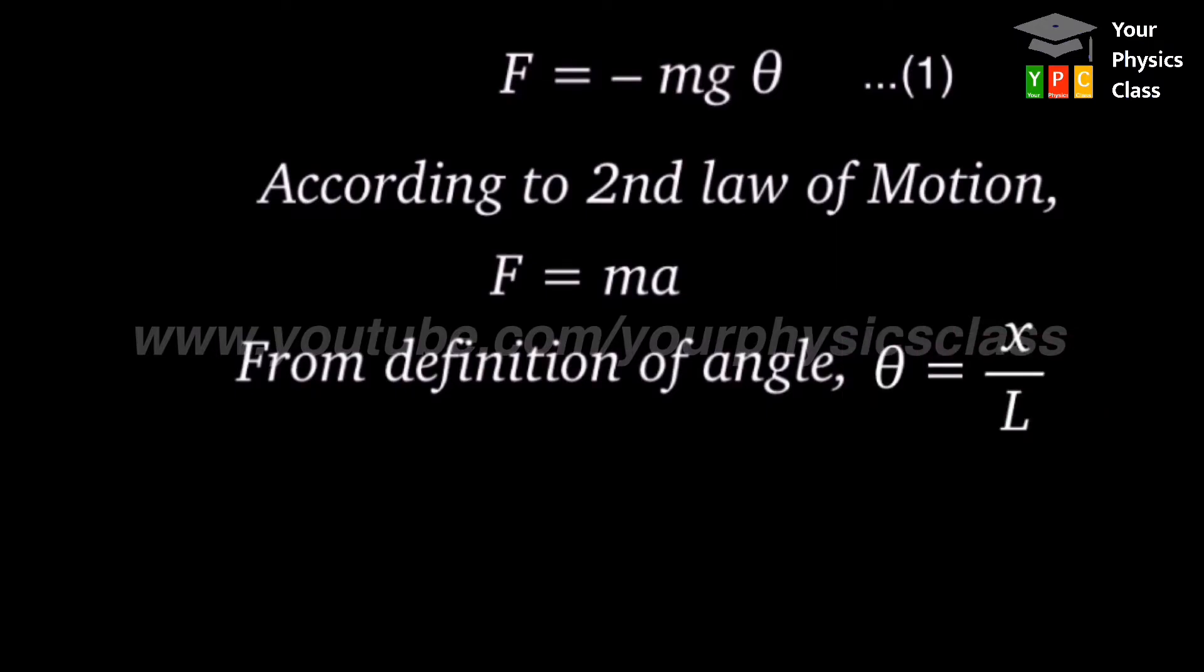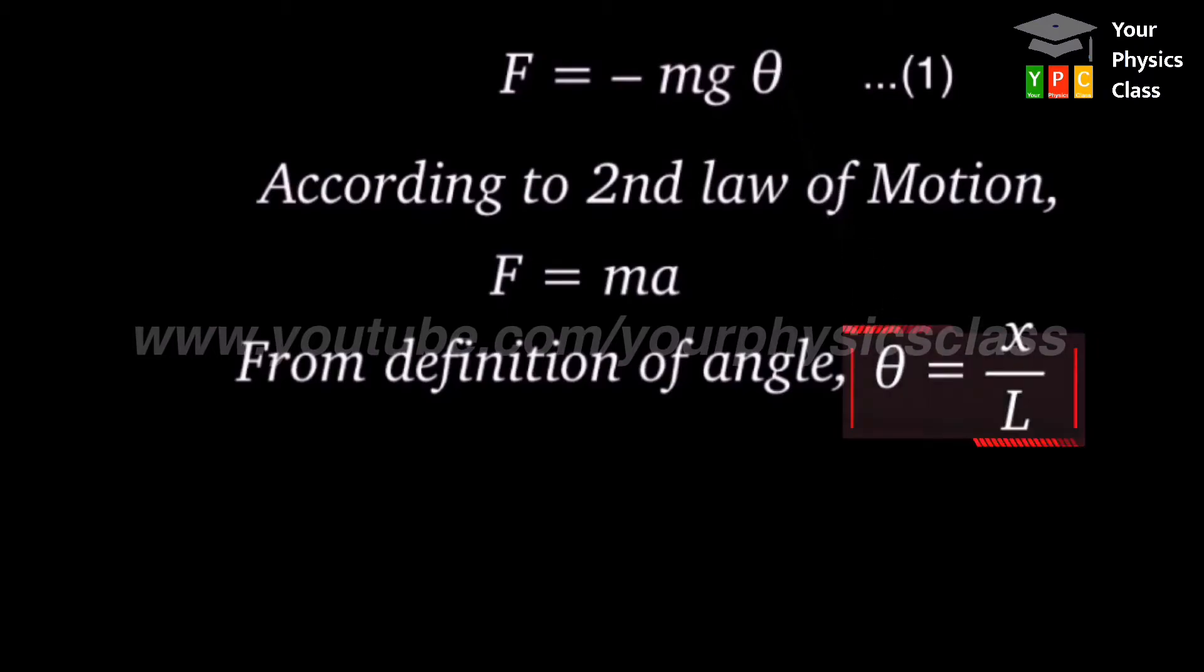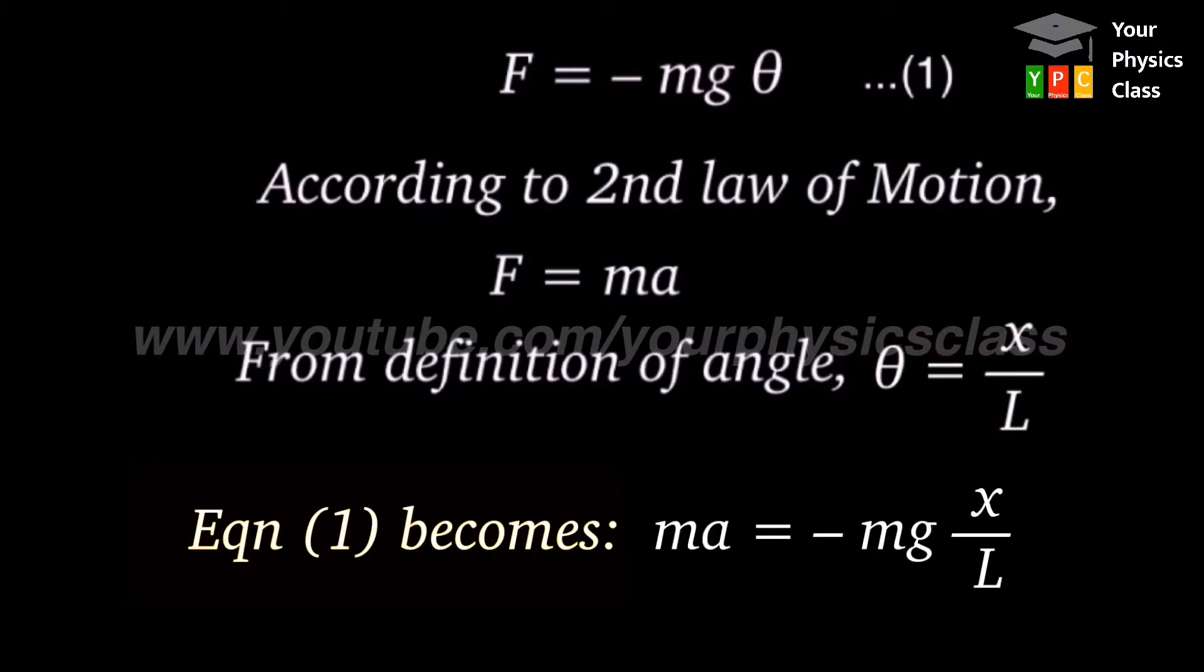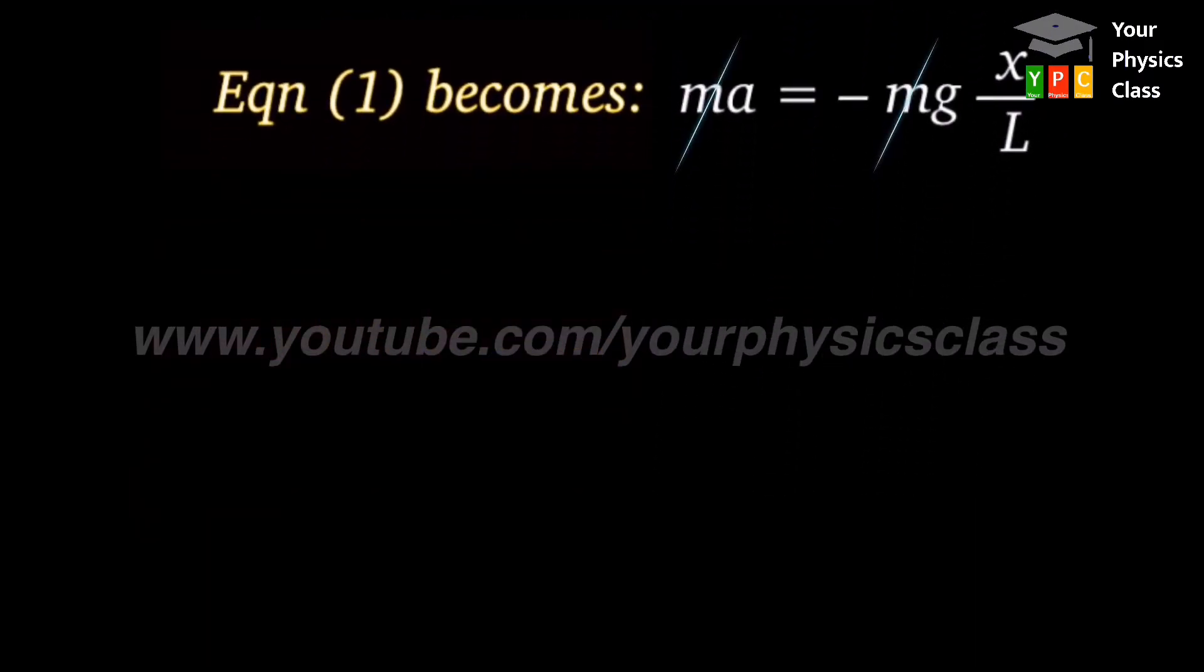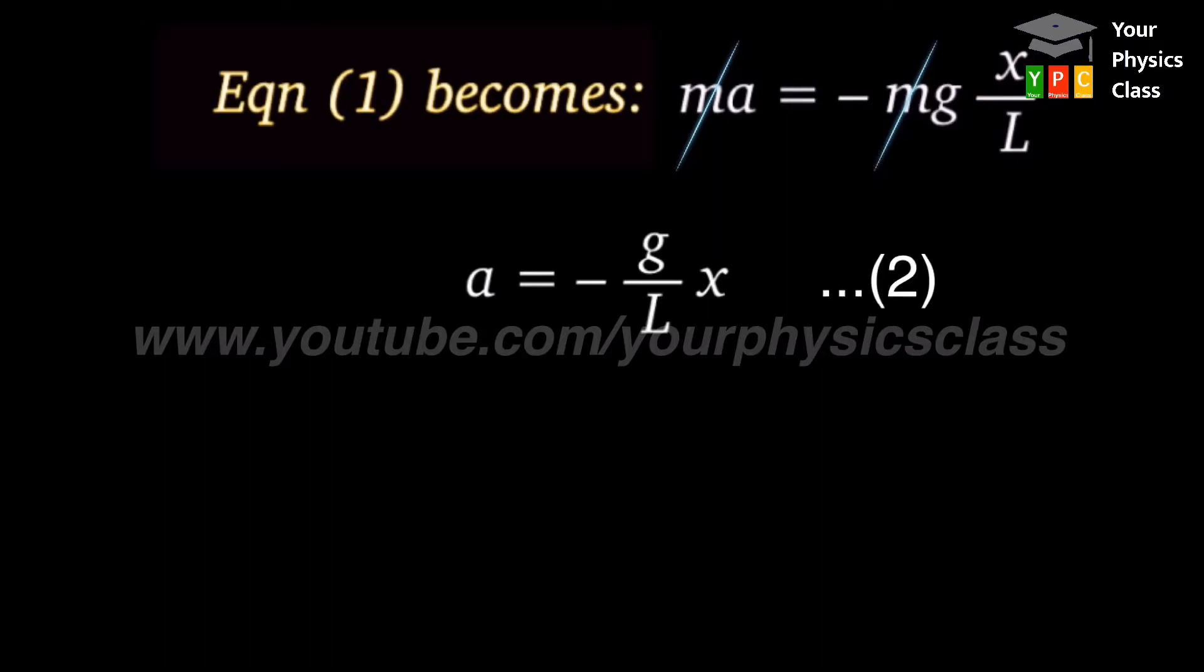So substituting these values in equation 1, we get ma equals minus mg times x by L. Cancelling like terms from both sides, we get a equals minus g by L times x. This is equation number 2.